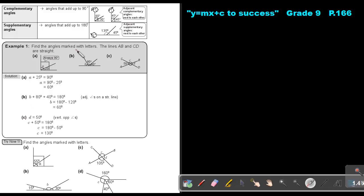Find the angles marked with letters. The lines AB and CD are straight. So here AB and CD are straight lines. So first that one, I know that that one is 90. So let's form an equation. A plus 25 will be 90. So A is 90 minus 25, which will be equal to 65 degrees.